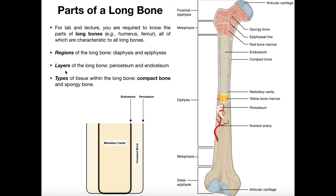Now we have what are called layers. Think of layers like you're dressing for cold weather — an undershirt, then a regular shirt, then a sweatshirt. Looking at a region of the diaphysis, the outer layer is what we call the periosteum — the most superficial layer of the long bone. There's also an inner layer called the endosteum, which lines the inside of the medullary cavity, the interior space of the diaphysis.